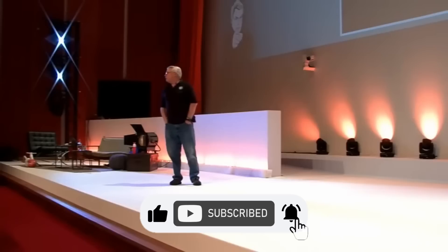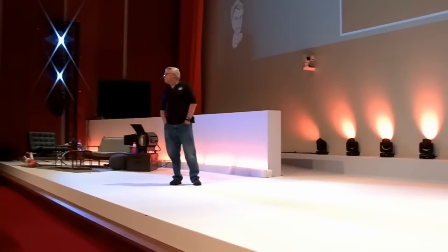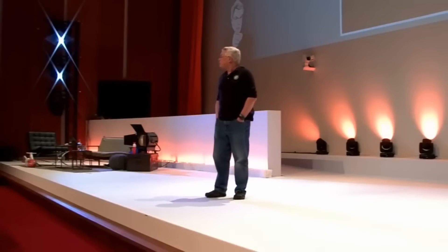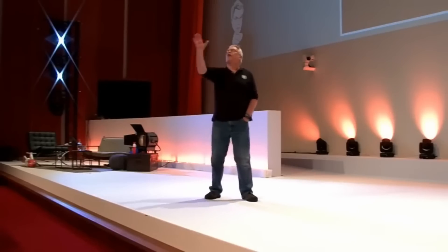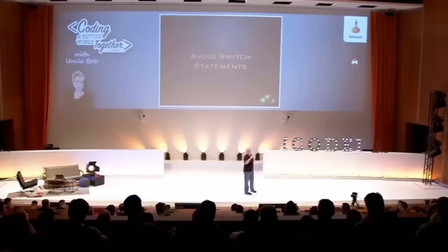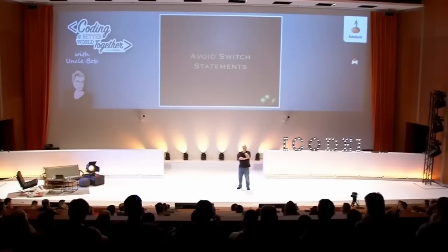Now what goes wrong? You add a new type of shape. What happens when you add a new type of shape? You've got to find all the switch statements. You've got to go through the whole code and find all the switch statements. Are you going to find them all? Are they all switch statements? Some of them might be if-else statements.